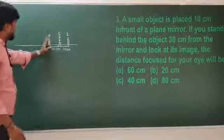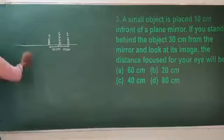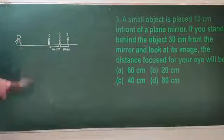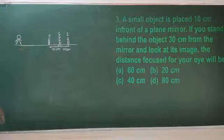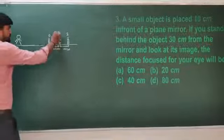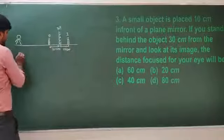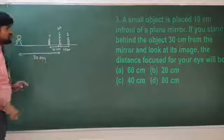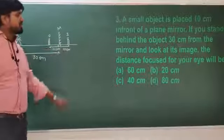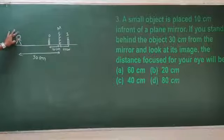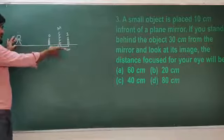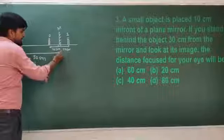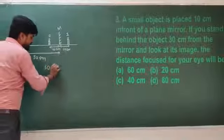If you stand behind the object at 30 centimeters from the mirror, to see the image your eye will focus at a distance of 30 plus 10, which equals 40 centimeters.